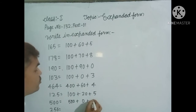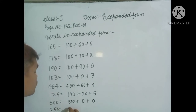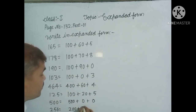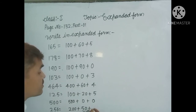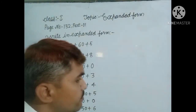In the last question, dear students, the hundreds digit is 2, so write down 200, plus 5 tens means 50, plus 6 ones, that means 6.